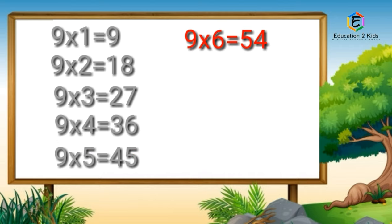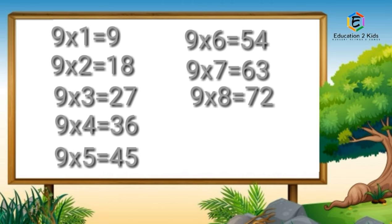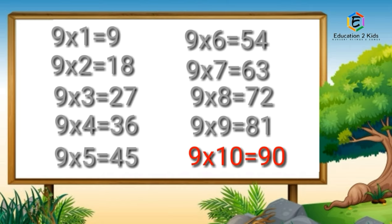Nine sixes are fifty-four. Nine sevens are sixty-three. Nine eights are seventy-two. Nine nines are eighty-one. Nine tens are ninety.